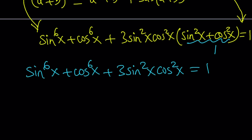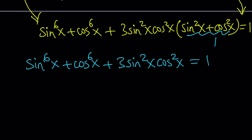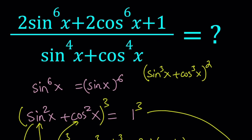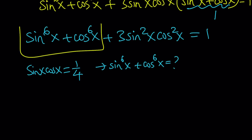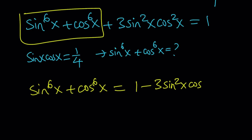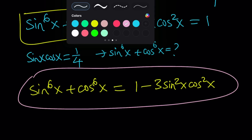This should be a well-known identity. Sine x to the 6th plus cosine x to the 6th plus 3 sine squared x cosine squared x equals 1. If they ever ask you to find the sum of 6th powers, it equals 1 minus 3 sine squared cosine squared. A possible test question: given sine x times cosine x equals 1/4, find the sum of 6th powers — this identity makes it easy. So, sine x to the 6th plus cosine x to the 6th equals 1 minus 3 sine squared x cosine squared x.